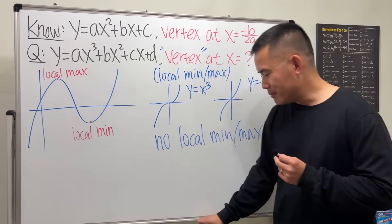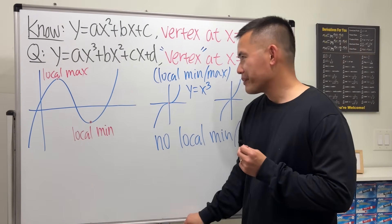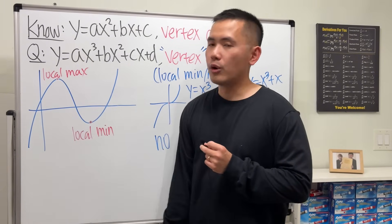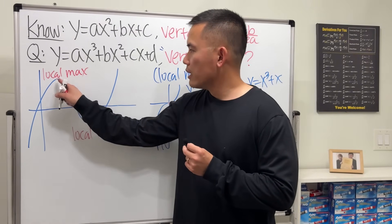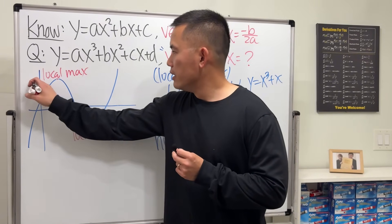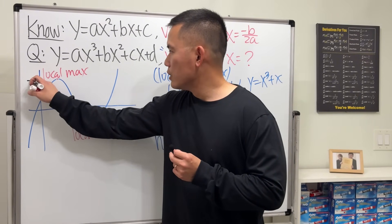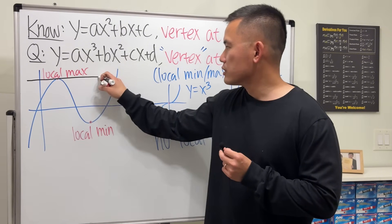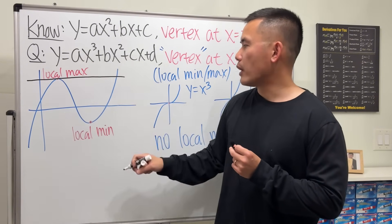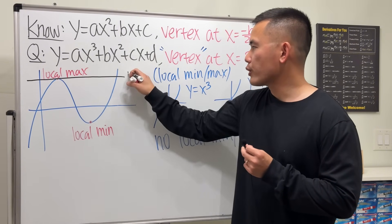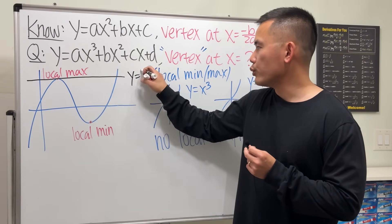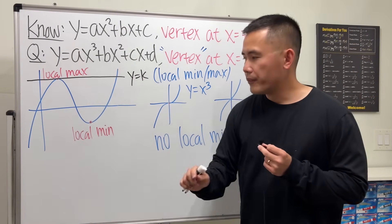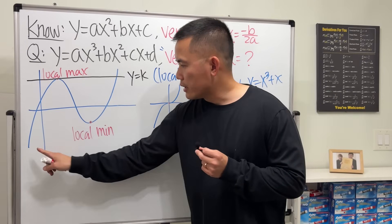Well, let me show you. Let's go back to the local maximum of this picture. Let me draw a horizontal line. So here we have a y value — I'm just going to call that y value k. Now let's take a look at the graph.